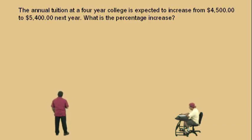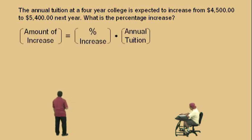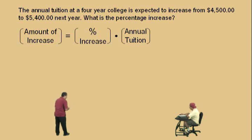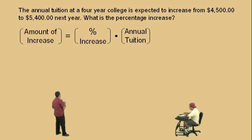Now, pay attention. The annual tuition at a four-year college is expected to increase from $4,500 to $5,400 next year. What is the percentage increase? Well, notice, Charlie, we're going to use our format that we developed over the past two lectures and use the fact that the amount of increase must equal a percent increase times, in this case, the annual tuition. It's basically saying that the portion, which is the amount of increase, is equal to the percent times the total. And our total is the annual tuition from which the increase occurred. So, our annual tuition from which it increased was the $4,500.